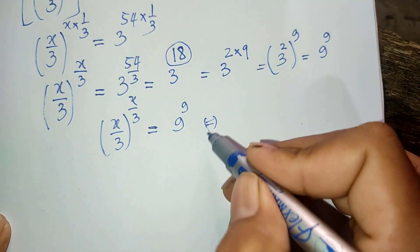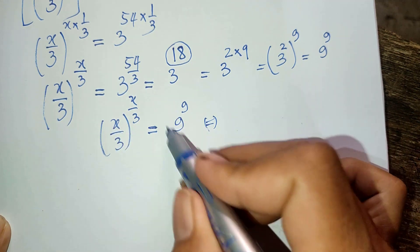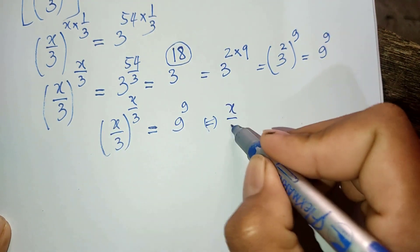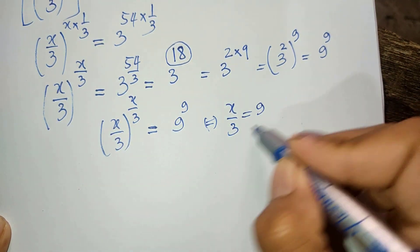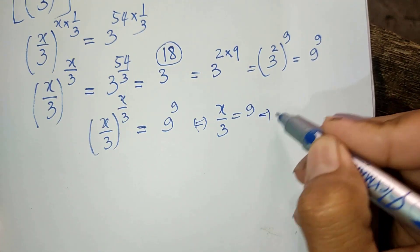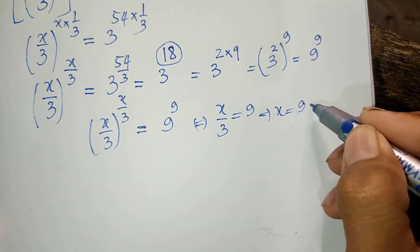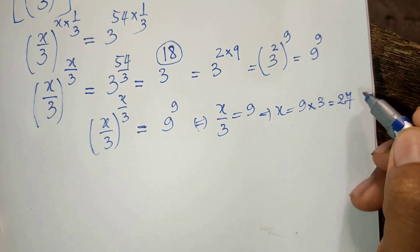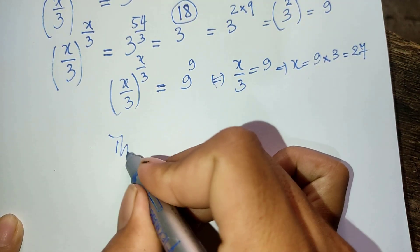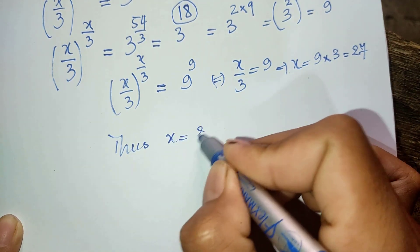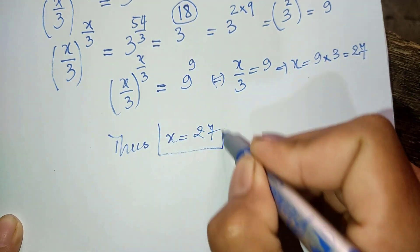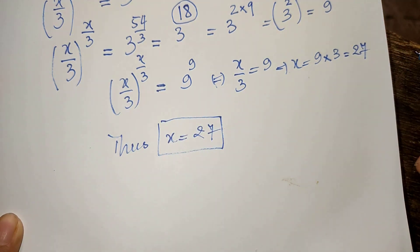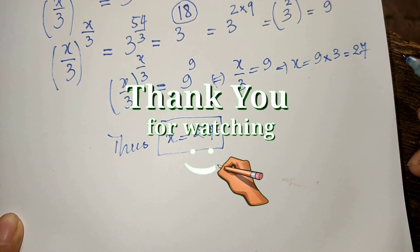So now we get 8 divided by 3 equals 9, and we can find the value of x. x equals 9 to the power 9 — if x equals 7, then x equals 9 multiplied by 3 equals 27. So x equals 27 is our solution. If you like my videos, please don't forget to subscribe to my channel for more exciting videos. Goodbye!